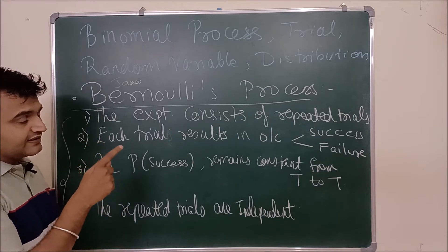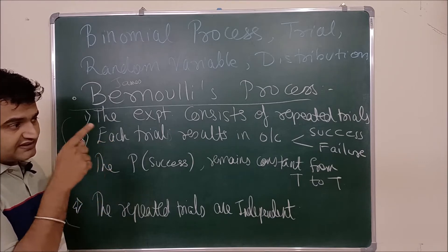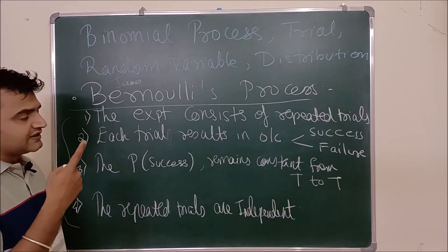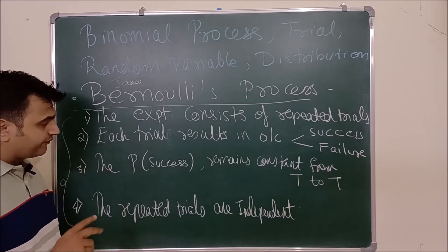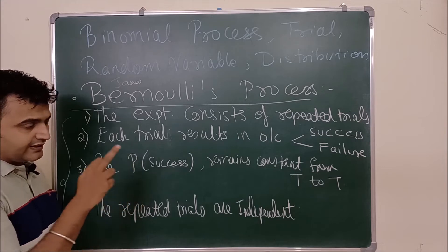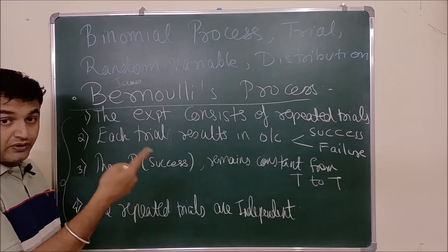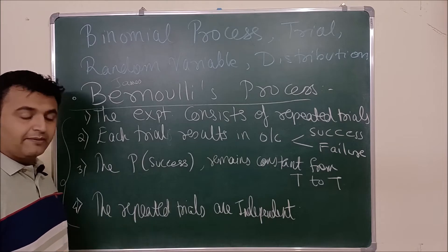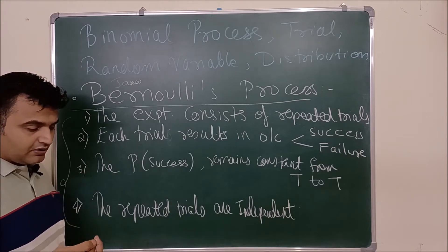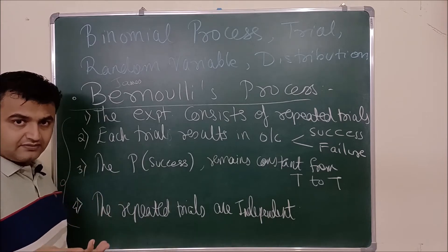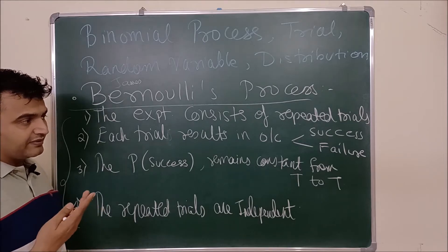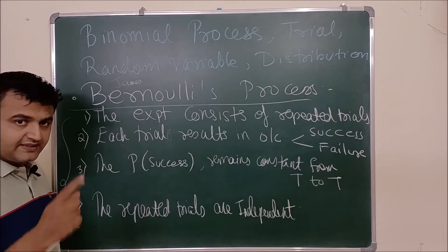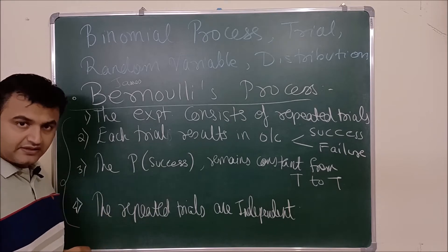Each trial results in an outcome which is a success or a failure — as I told you, two outcomes. The probability of success remains constant from trial to trial. Like if I say when I am tossing a coin and X is the number of heads — X is the random variable for heads occurring — you toss a coin: if it is a head, it is a success; if it is a tail, it is a failure.